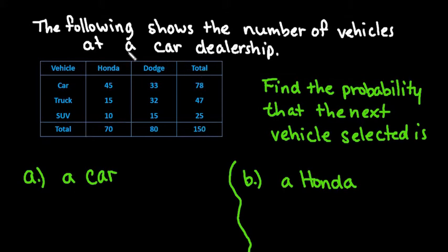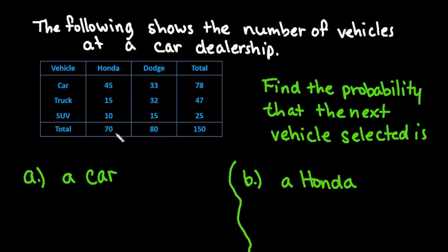The following shows the number of vehicles at a car dealership. We have 45 cars that are Hondas, 33 cars that are Dodge, and 78 total cars. We have 47 total trucks, 15 of which are Hondas and 32 which are Dodge, and we have 150 total vehicles. You can get 150 by adding up the totals for car type or manufacturer.